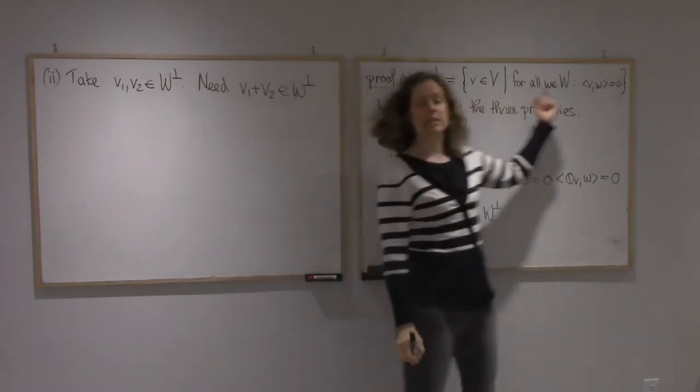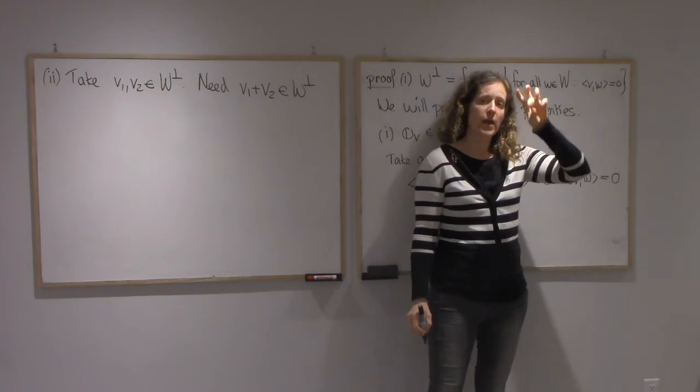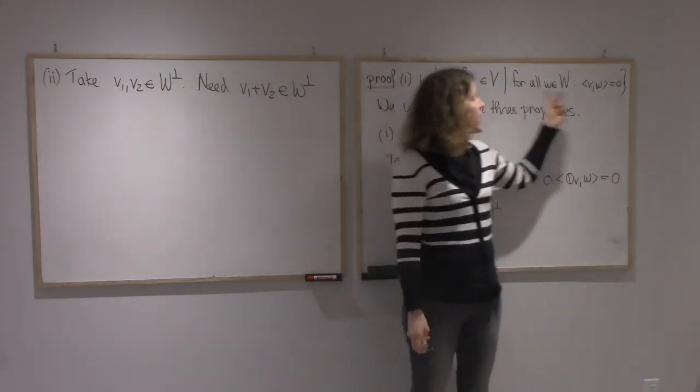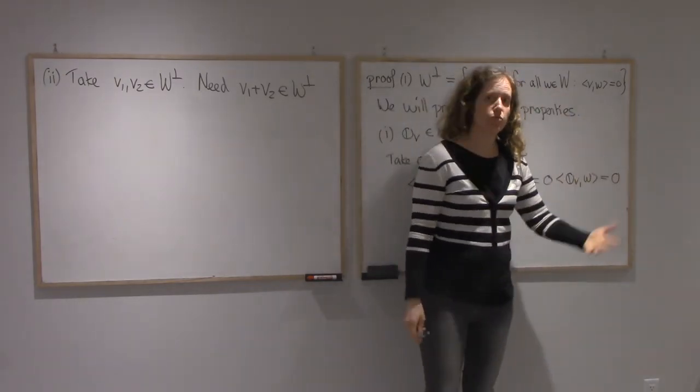We need that v1 plus v2 is in W-perp as well. So I need to consider this condition for v1 plus v2, but I need to assume, I can assume because we've assumed that v1 and v2 were in W-perp, that this is true for v1 and this is true again for v2.